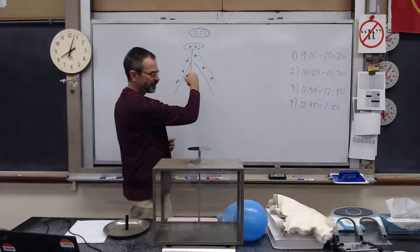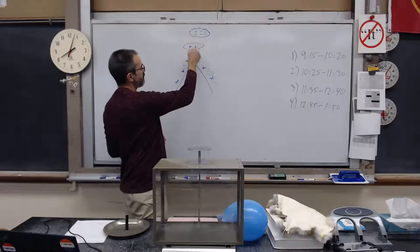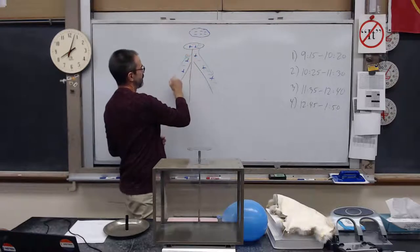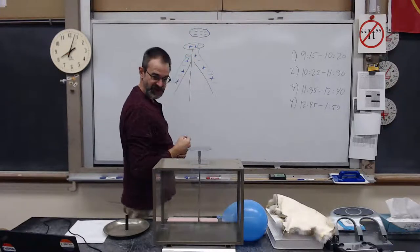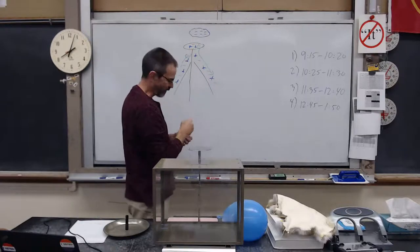still notice in the whole electroscope, you end up with an equal number of pluses and minuses, but some of these minuses get shoved down toward the leaves. The leaves become negatively charged, leaving behind, by the way, again, a positive charge up there.